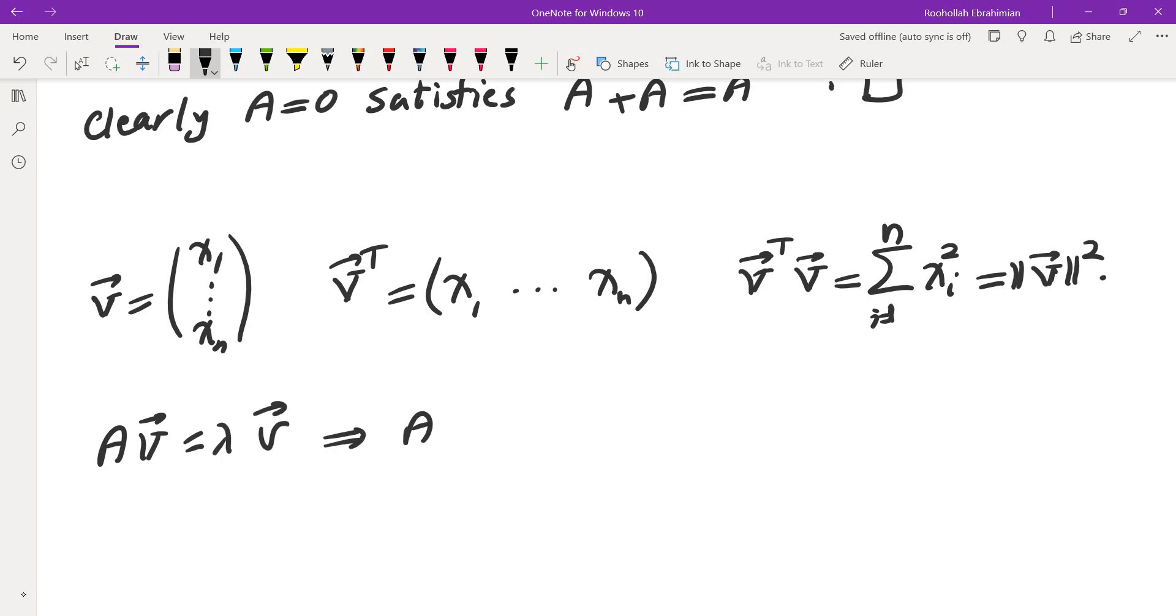The other one is that if AV equals lambda V, then A squared V equals lambda AV, and AV is lambda V, so that would be lambda squared V. And do that again, you end up getting A to the power of KV equals lambda to the power of KV. So this is another fact that I used.